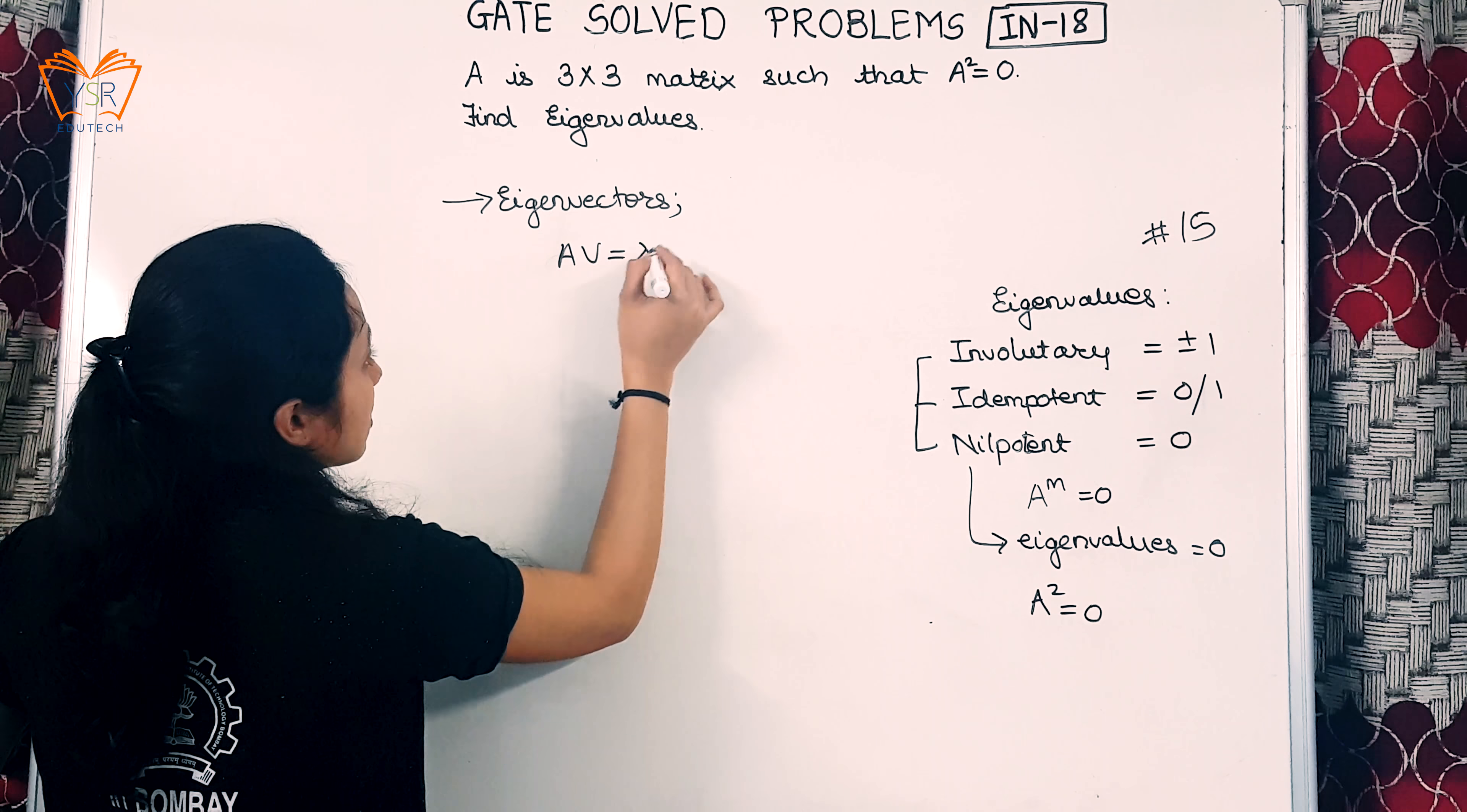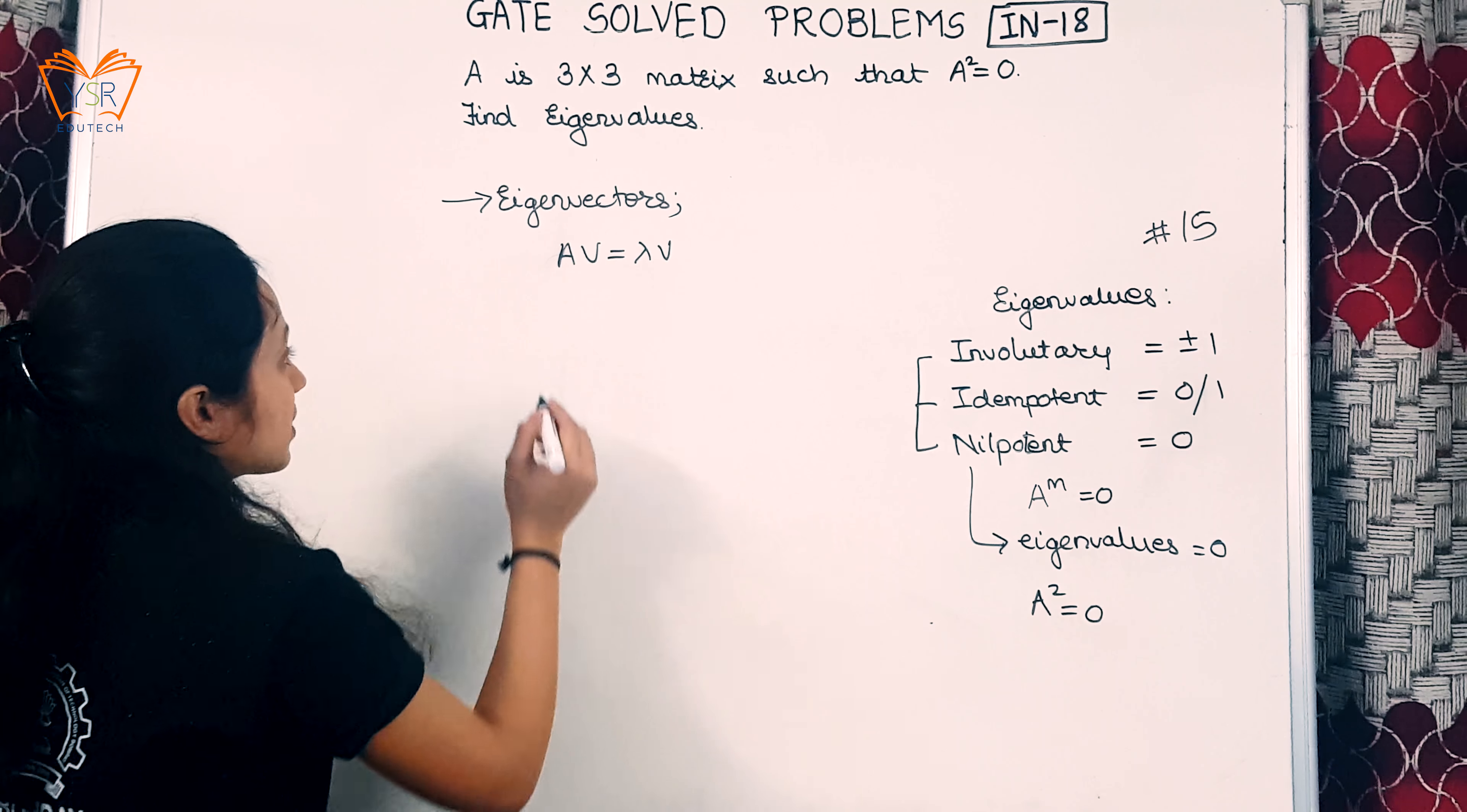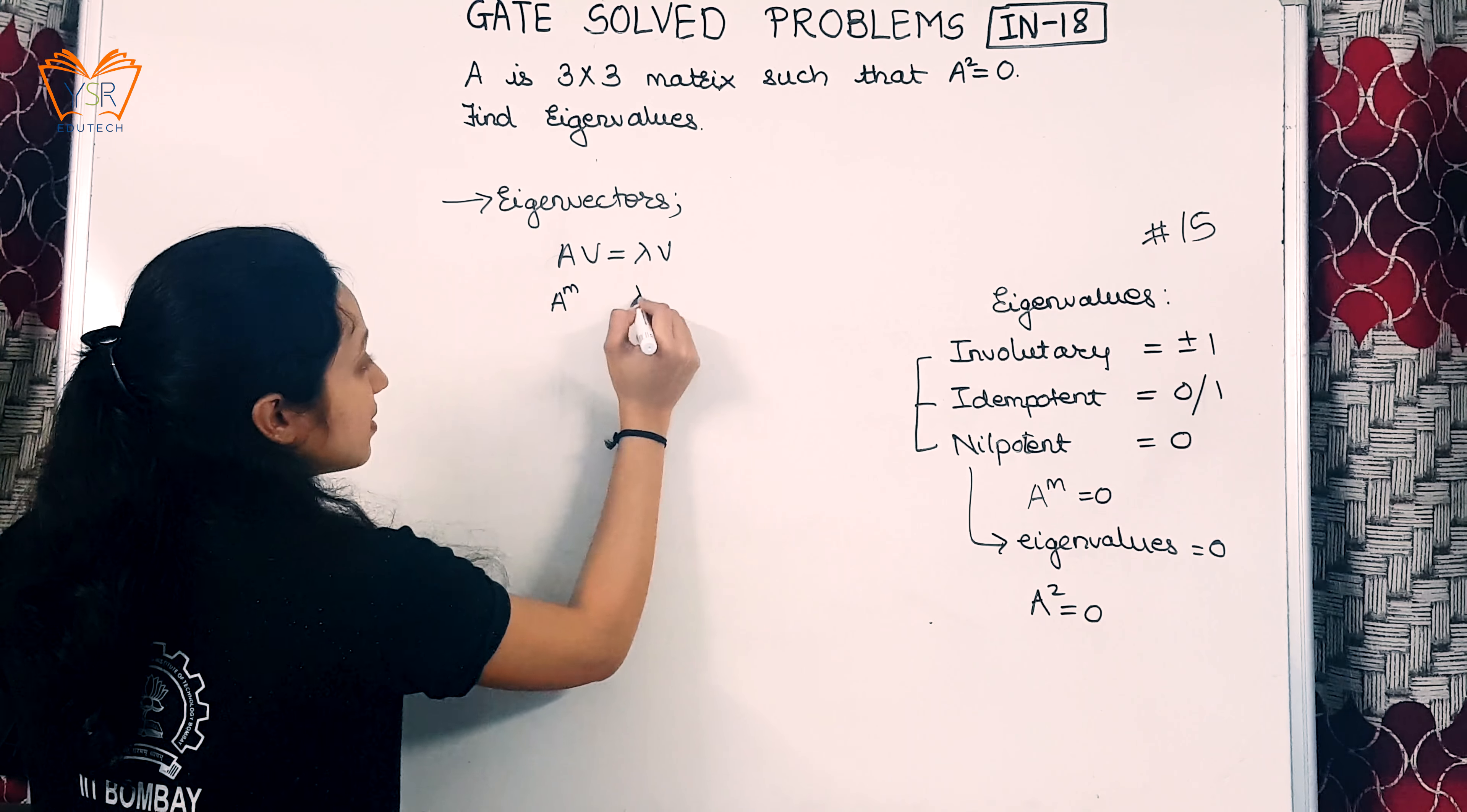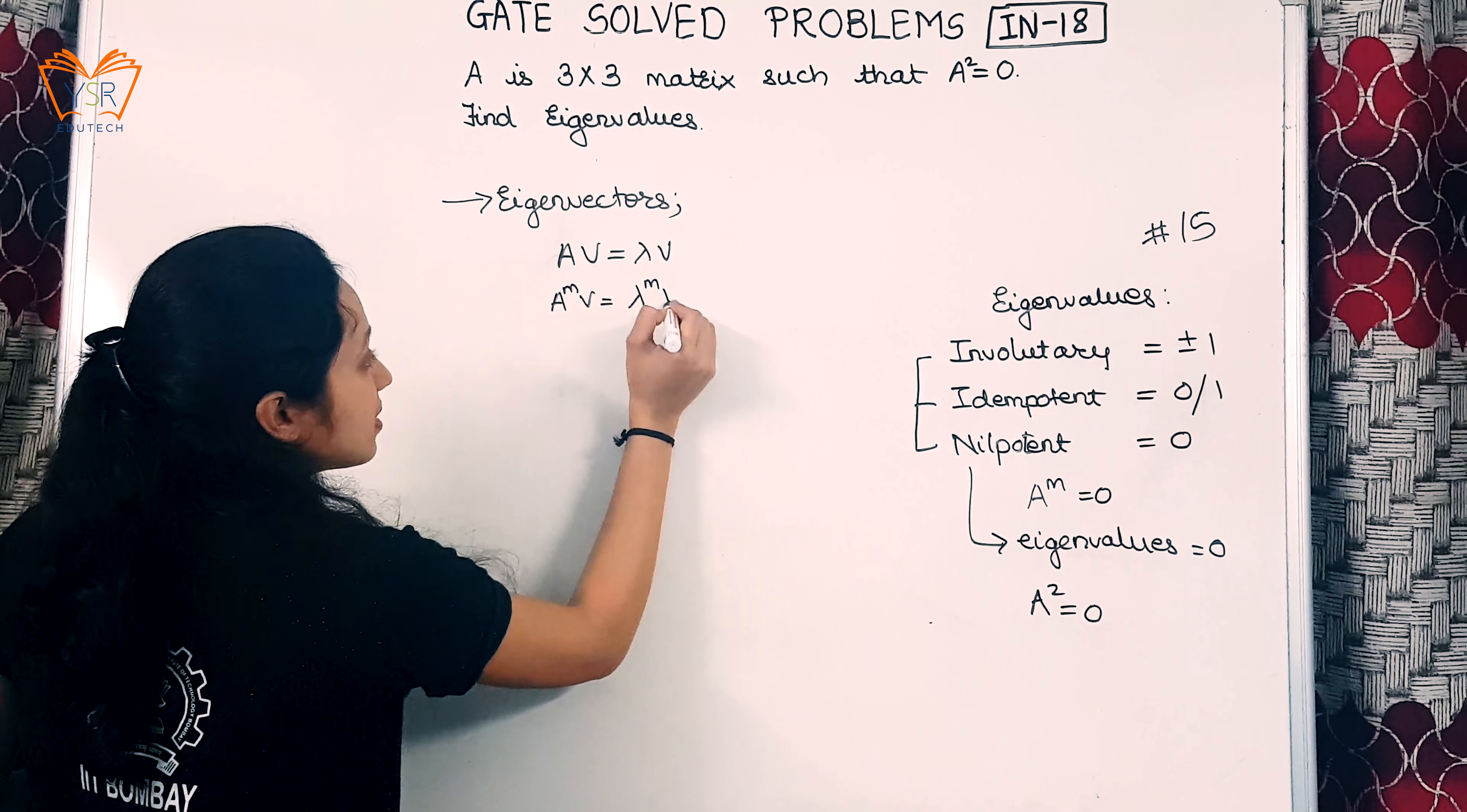Av = λv, where A is the matrix, λ is the eigenvalue, and v are the eigenvectors. If the matrix is squared or cubed, the eigenvalues will be squared and cubed and so on, but the eigenvectors will remain the same.